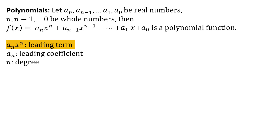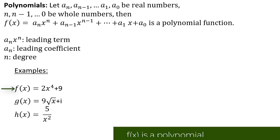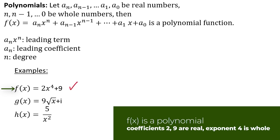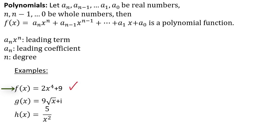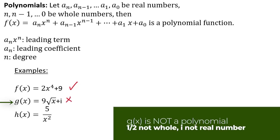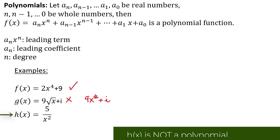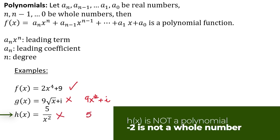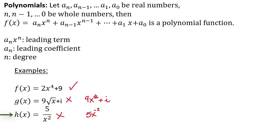a sub n x to the n is the leading term, a sub n is the leading coefficient, and n is the degree. For example, f of x equals 2x to the power 4 plus 9 is a polynomial because the coefficient on the x to the fourth term is a real number, as is the a sub 0 term, which is 9. g of x equals 9 times the square root of x plus i is not a polynomial because this is equivalent to 9 times x to the 1 half, and the exponents must be whole numbers. Similarly, h of x equals 5 times x to the minus 2 is not a polynomial because whole numbers start at 0 and go forward.